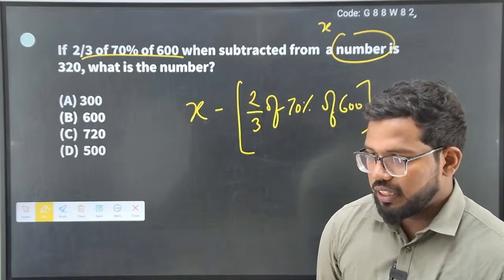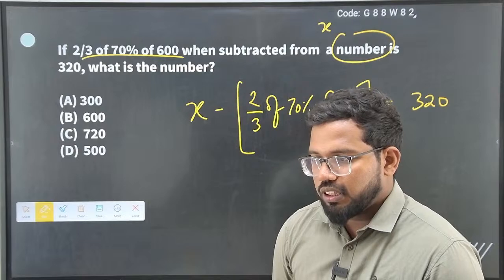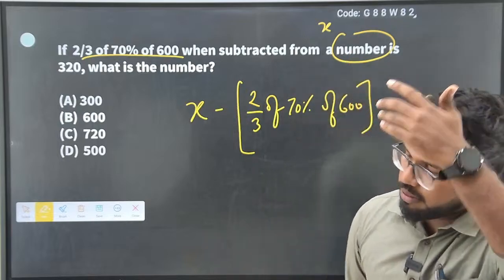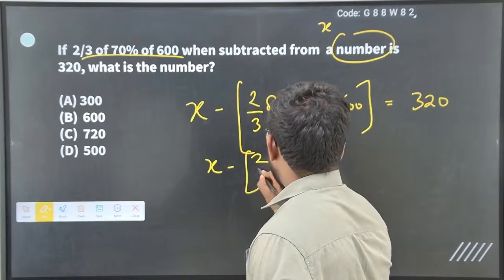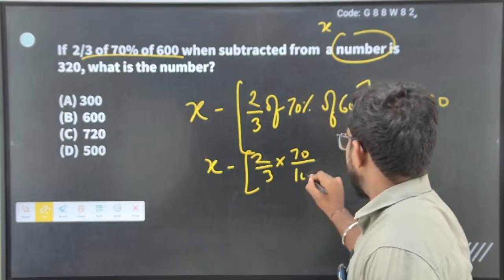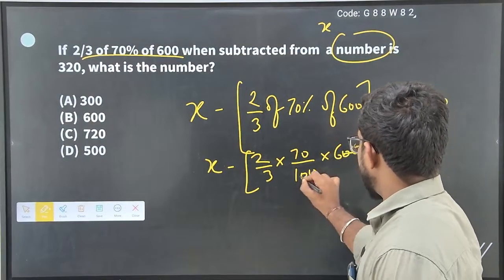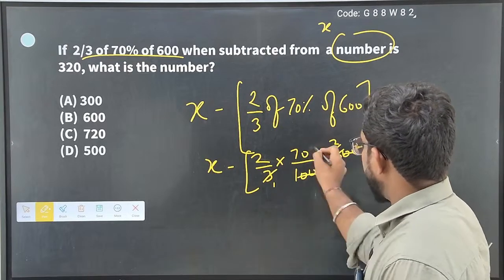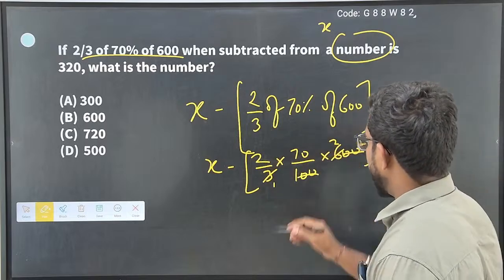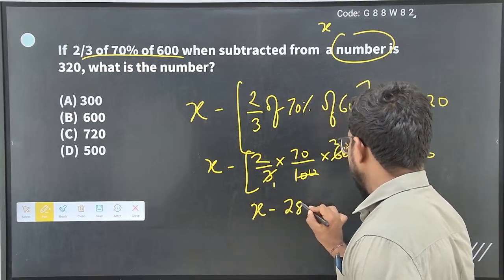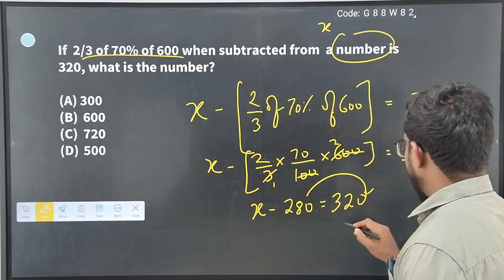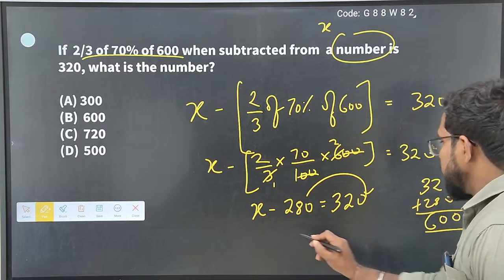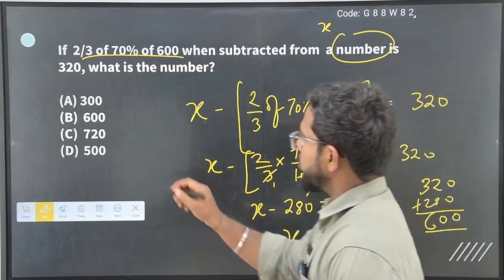Siksa, okay. Yes, Atri, correct answer. Bavitran, yes, correct. Very good. So, X minus bracket 2 by 3 into 70 by 100 percentage by 100, 600. So, 0 0s cancel. Okay. Now, 3 ones are, 3 twos are. Okay. So, is equal to 320. So, remaining numbers multiply, which is 2 into 2, 4, 4 into 7, 28 which is 280. 280 is equal to 320. 280 on the other side, it is going to be addition. So, 320 plus 280, addition value is 600. So, X value is equal to 600 which is option B. Correct answer.